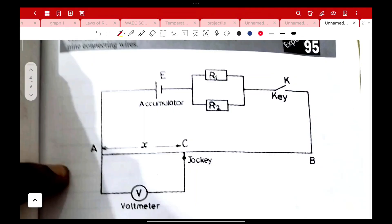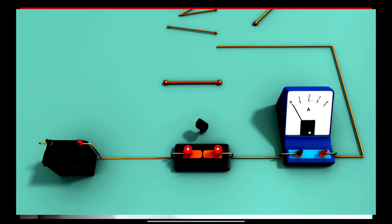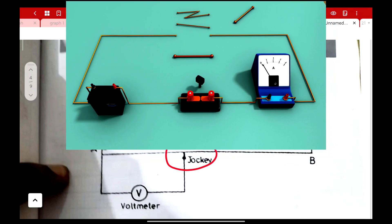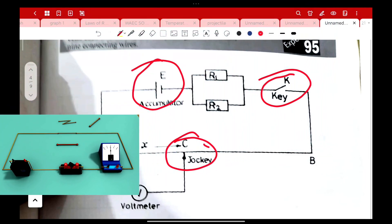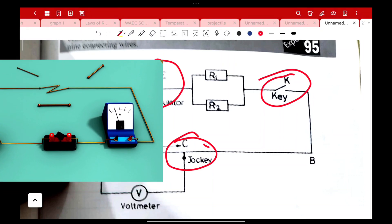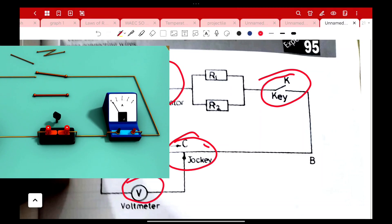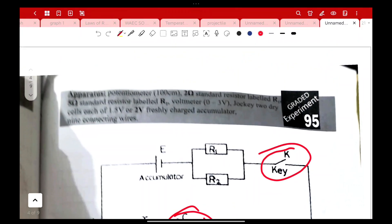Looking at this circuit diagram again, answering the questions about precautions: number one, I ensured that the key was open when readings were not being taken. You can also say that I avoided errors due to parallax on the voltmeter, ammeter and the potentiometer. I ensured that the jockey did not scrape the potentiometer wire, and that the wires or cables were well connected.